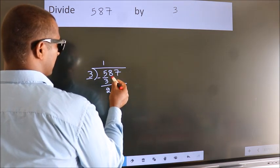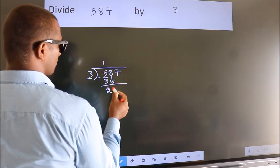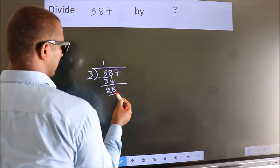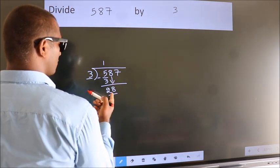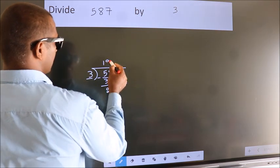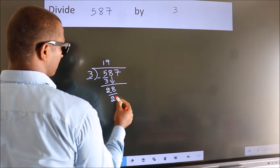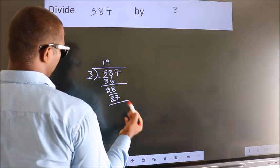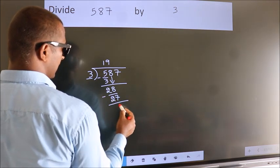After this, bring down the beside number. So 8 down, making 28. A number close to 28 in 3 table is 3 9s 27. Now we subtract. We get 1.